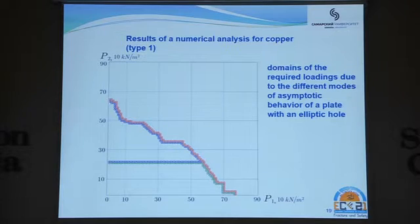All the computations were collected and then this graph was made, where you can see the domains of required loadings for each type of behavior. This is the graph for copper type 1. You can see the boundaries of the domains. When structure behaves elastically, it is green. When the behavior is cyclic plasticity, it is blue.